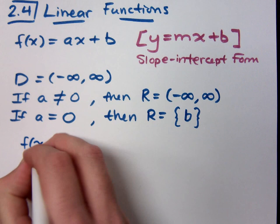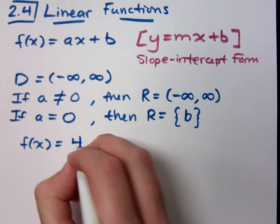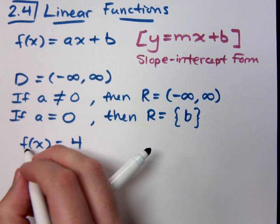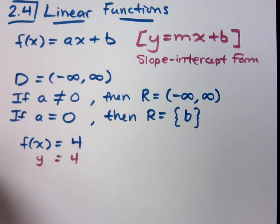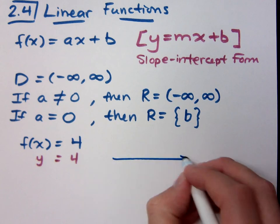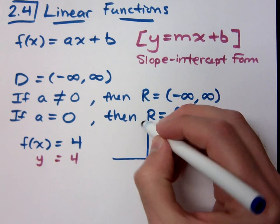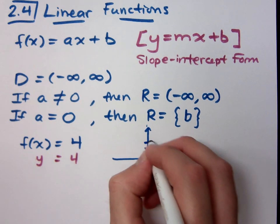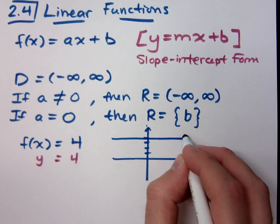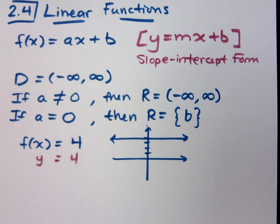Here's what I mean by that. If I say f(x) = 4, remember that f(x) is the same thing as saying y. So if I said y = 4, we should know how this graphs because we've done this before. It means that we have a horizontal line going through 4.